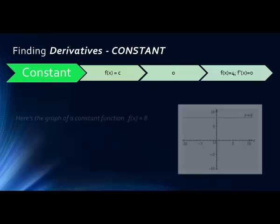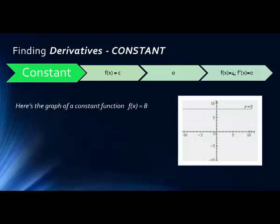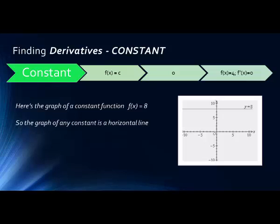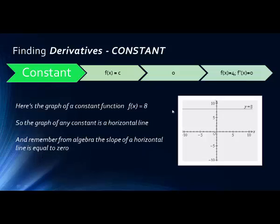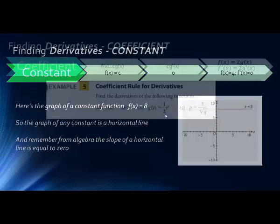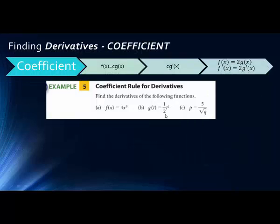Let's look at the constant rule and understand what it means. Here's the graph of a constant function f of x equals 8 — notice it is a horizontal line. The derivative is also a slope, a rate of change at a specific point. From algebra we know that the slope of any horizontal line equals 0, so it makes sense that the derivative is also 0.